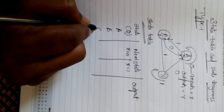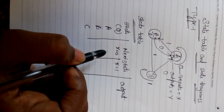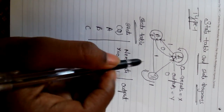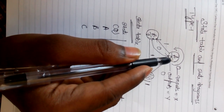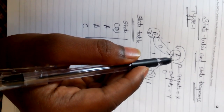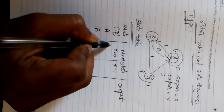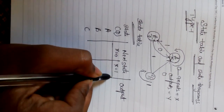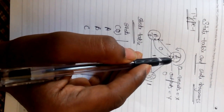At state A, when we give input X equal to 0, there is no change in state — it remains at A. Observe it clearly: when X is equal to 0, the state doesn't change and stays at A.